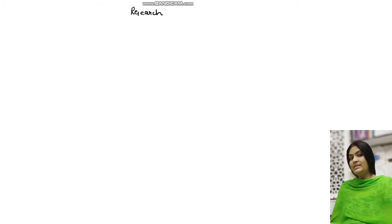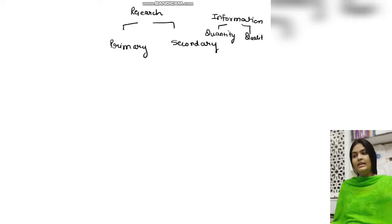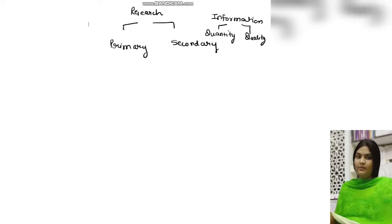There is a basic thing: research is like collecting data, gathering data, analyzing it, interpreting it. So that can be in two forms — primary research or secondary research. When we are getting the information, that information can be based on quantity of data or quality of data. So these are the two forms of information which are there when we are following the research.